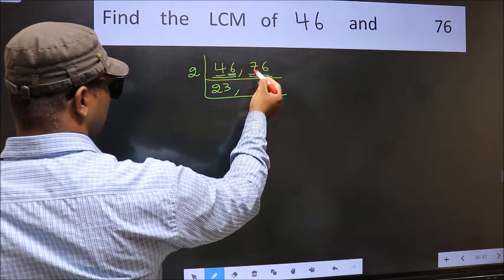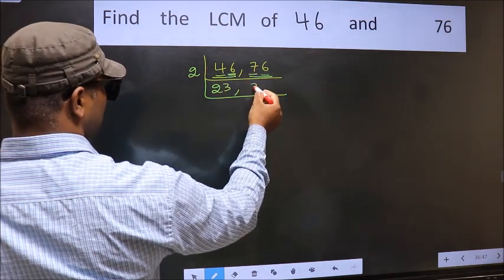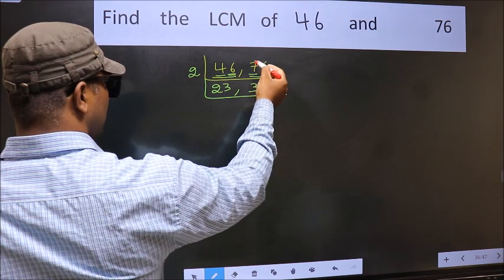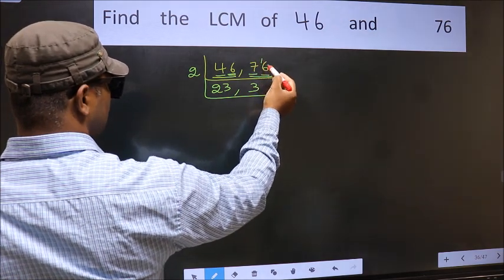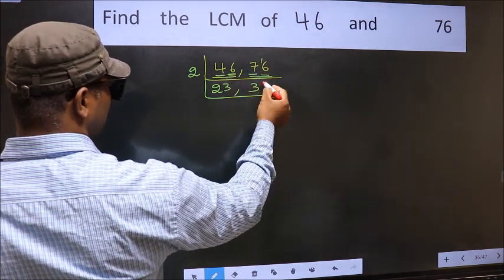First number 7. A number close to 7 in 2 table is 2 times 3 is 6. 7 minus 6, 1. 1 carried forward 16. When do we get 16 in 2 table? 2 times 8, 16.